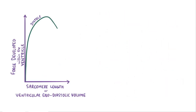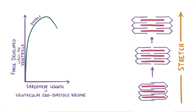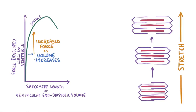As the ventricles fill with more blood returning through the veins, their walls get more and more stretched, and that stretches out every single sarcomere in the muscle cells as well. This means that there's more space and no actin overlapping, which allows more myosin heads to properly interact with actin, and as a result create more force or tension during contraction. Looking at the graph, this would make our curve move steadily upwards with increasing force as there's increasing volume.